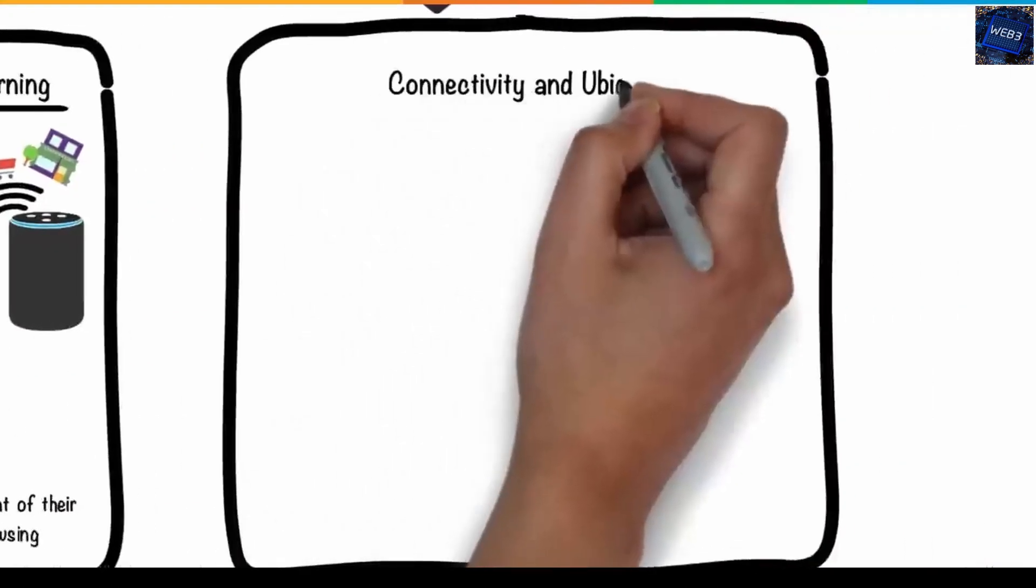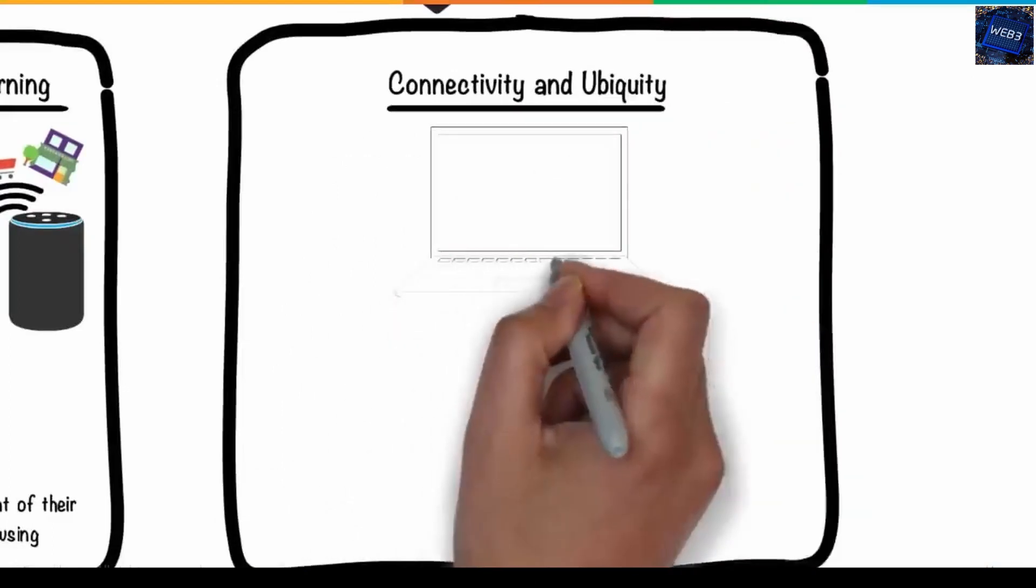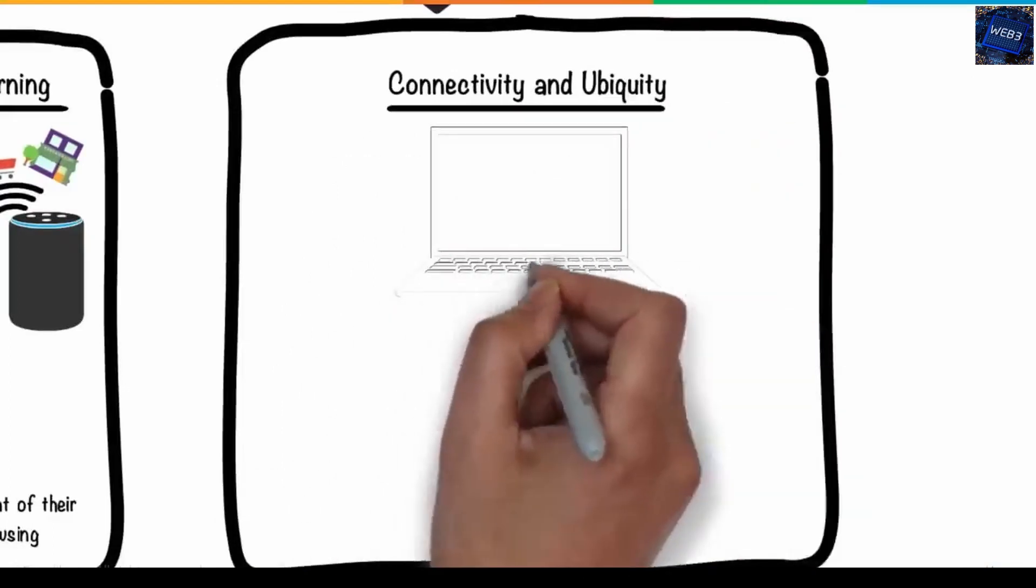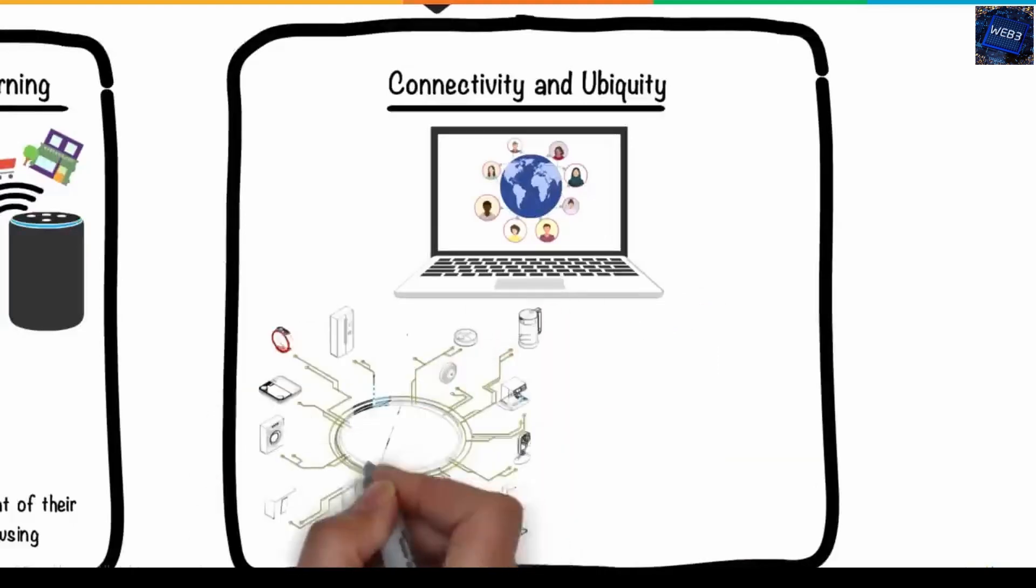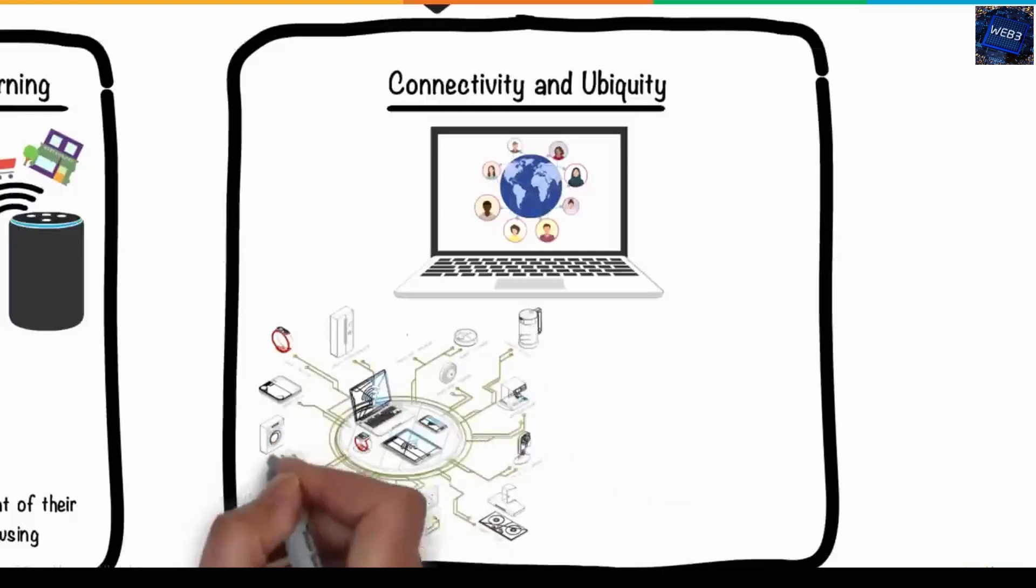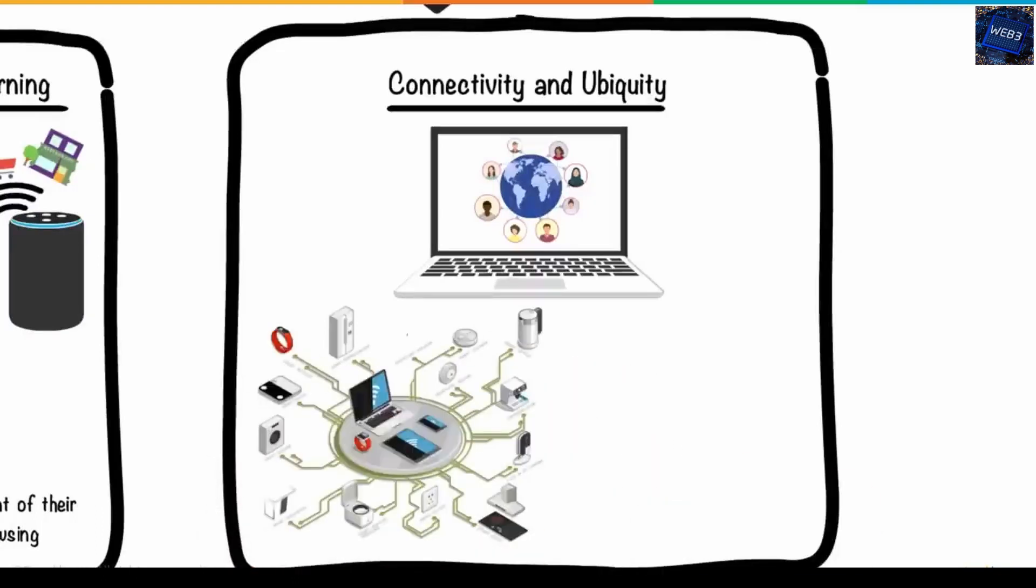Fourth is connectivity and ubiquity. In Web 3.0, the internet will be accessible to everyone, anywhere, at any time. Why? Because IoT, Internet of Things technology, will launch in several new smart devices. These internet-connected devices will no longer be limited to PCs and smartphones, as they were in Web 2.0.